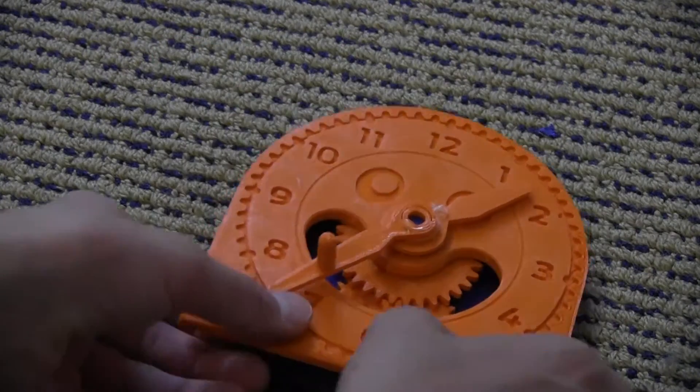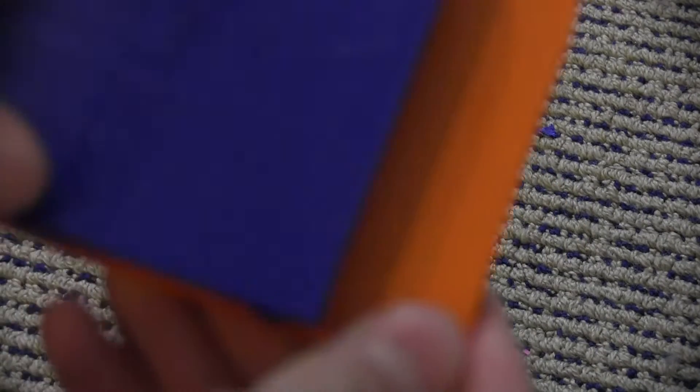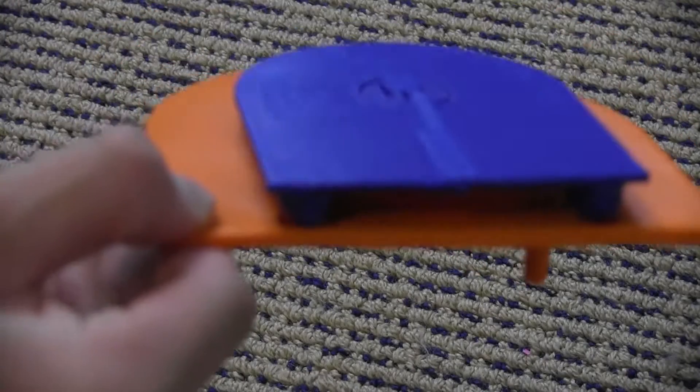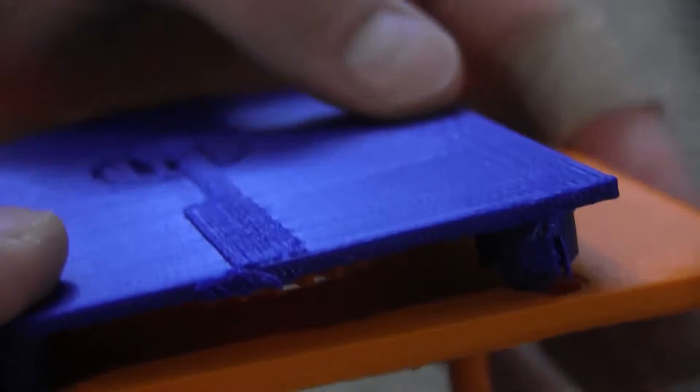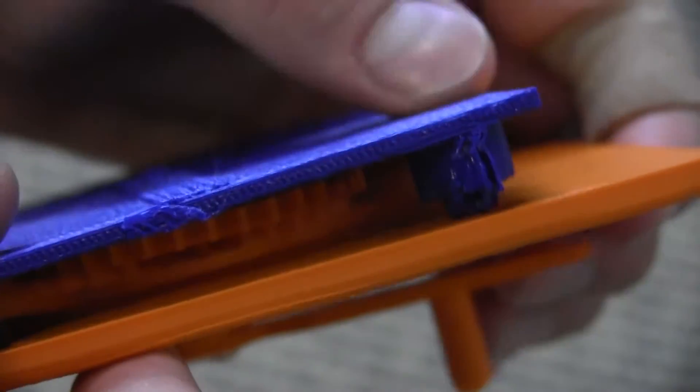The only issue is that I found when I was printing this and scaling it in Simplify 3D that the notches on the back right here did not work correctly and do not fit in. As you can see, the notches do not fit in correctly, and it doesn't stay together as a result.